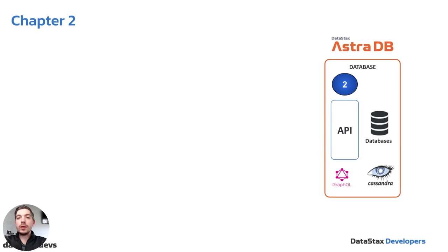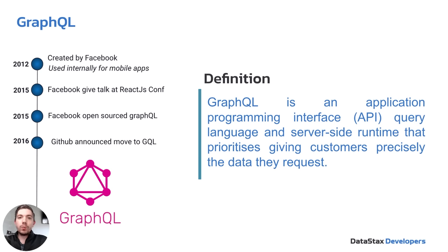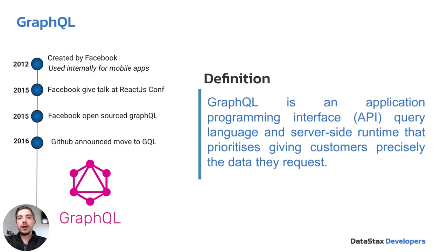We are using the GraphQL API. AstroDB comes with this Stargate data layer that provides different APIs — REST, Document, and GraphQL. GraphQL was created by Facebook in 2012 and really gained popularity when GitHub announced their move to GraphQL in 2016. It is an API query language that allows you to specifically request the data that you want, rather than getting all the data that an endpoint would provide. With a REST endpoint, you would get a huge bulk of data regardless of whether you need it all. GraphQL lets you specify which data you want and just sends that back, which really reduces bandwidth — and it's really useful for mobile applications.